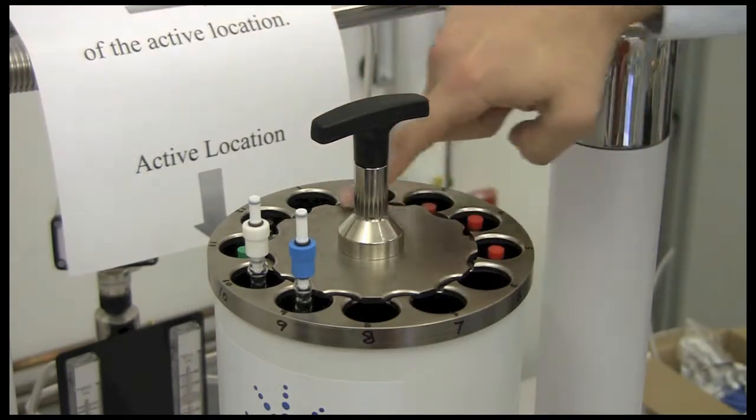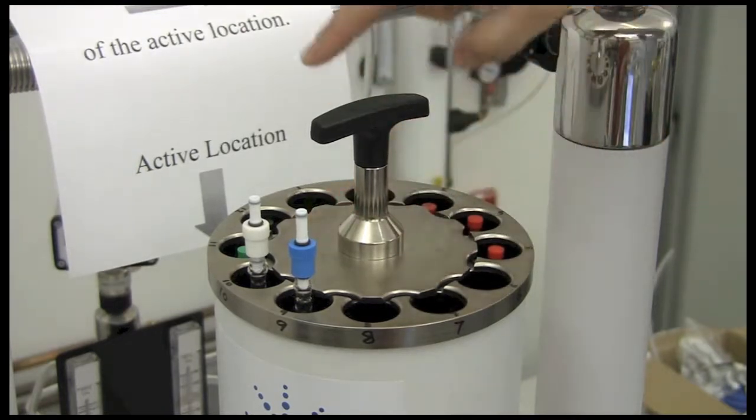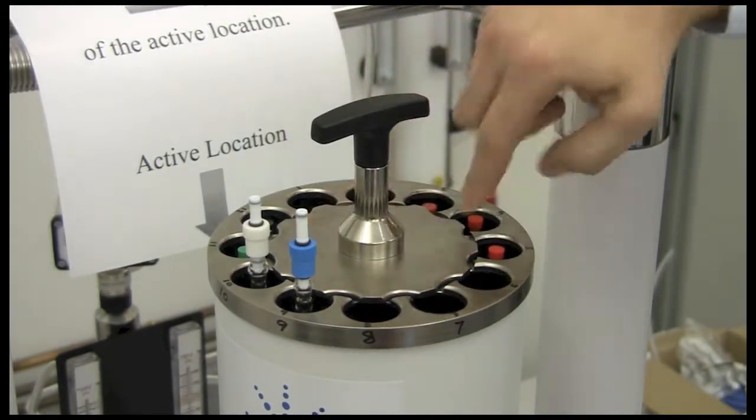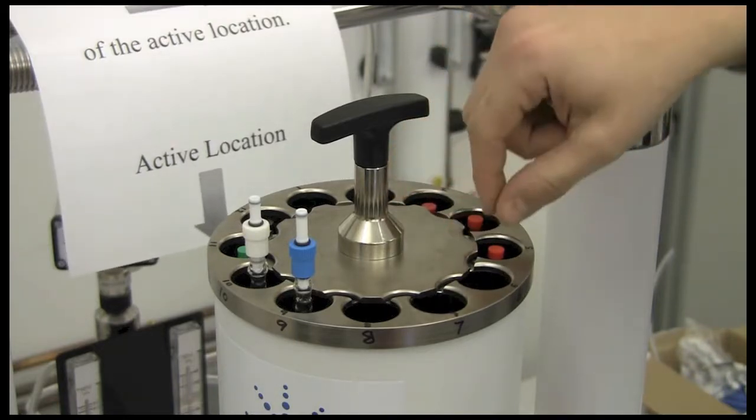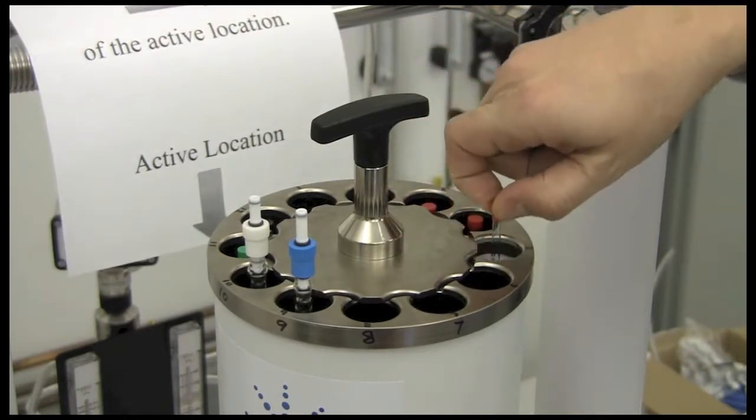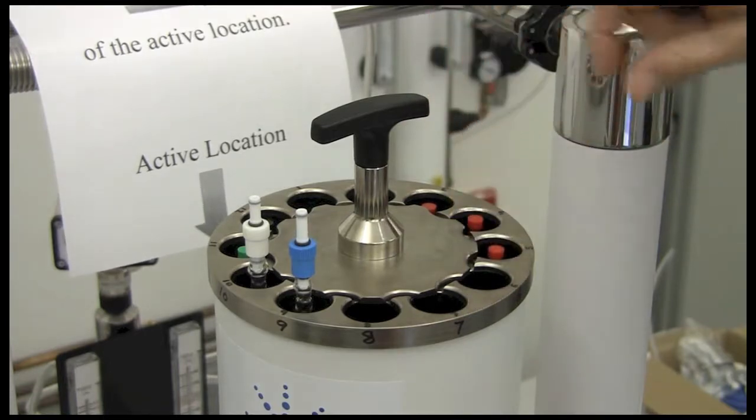You can also notice that there is this central thing with the handle. This is the capture handle, and normally it should be in the capture position, which prevents the sample from coming out of the sample changer carousel.